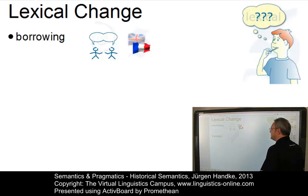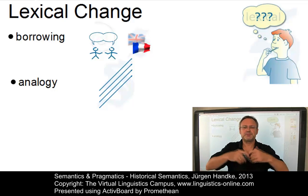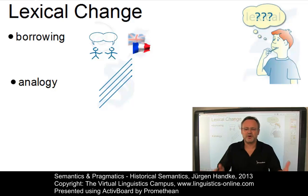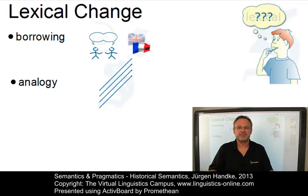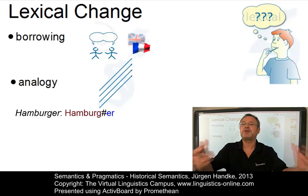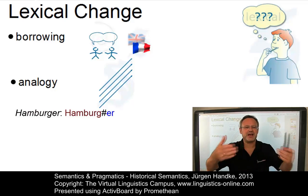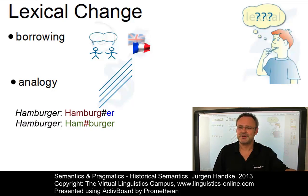Then we can find the phenomenon of analogy. A vast number of changes in language have been attributed to a linguistic process called analogy. Analogical change involves the change or creation of a form A such that its relation to another form B is analogous. For example, take the English word 'hamburger', which originally comes from a combination of the German town Hamburg and the affix '-er', meaning someone or something from Hamburg. But speakers reanalyzed this word as consisting of 'ham' plus 'burger', and on this basis created new words by analogy like 'cheeseburger', 'chili burger', and 'fish burger'.